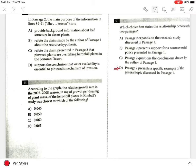Choices A, B, and C are incorrect because they do not reflect the best relationship between the two passages. Passage 2 does not expand on the research study discussed in Passage 1. Passage 2 does not present support for a controversial policy presented in one. And Passage 2 definitely doesn't question the conclusions drawn by the author of Passage 1.